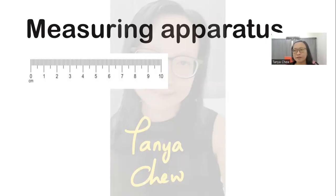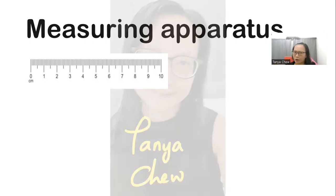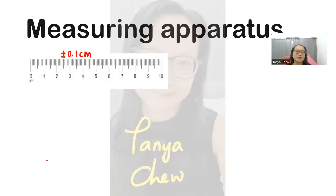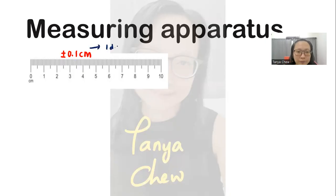For example, look at this meter rule. If you cannot recall the absolute uncertainty, think of it even simpler: think of it as the smallest division on the meter rule. The smallest division on the meter rule is 0.1 cm. Just add plus or minus — that will be the absolute uncertainty of the meter rule. So 0.1 cm is one decimal point, and whenever you take a reading using the meter rule, make sure you record your final reading to one decimal point only.